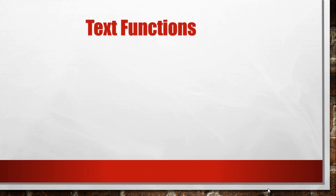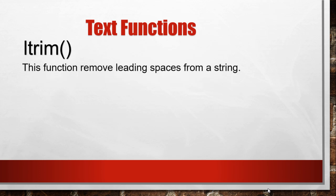The first text function we are going to discuss today is LTRIM. The basic purpose of this function is to remove the spaces present on the left side of the given string. It removes leading spaces — 'leading' meaning the spaces at the starting, at the left side of the string.